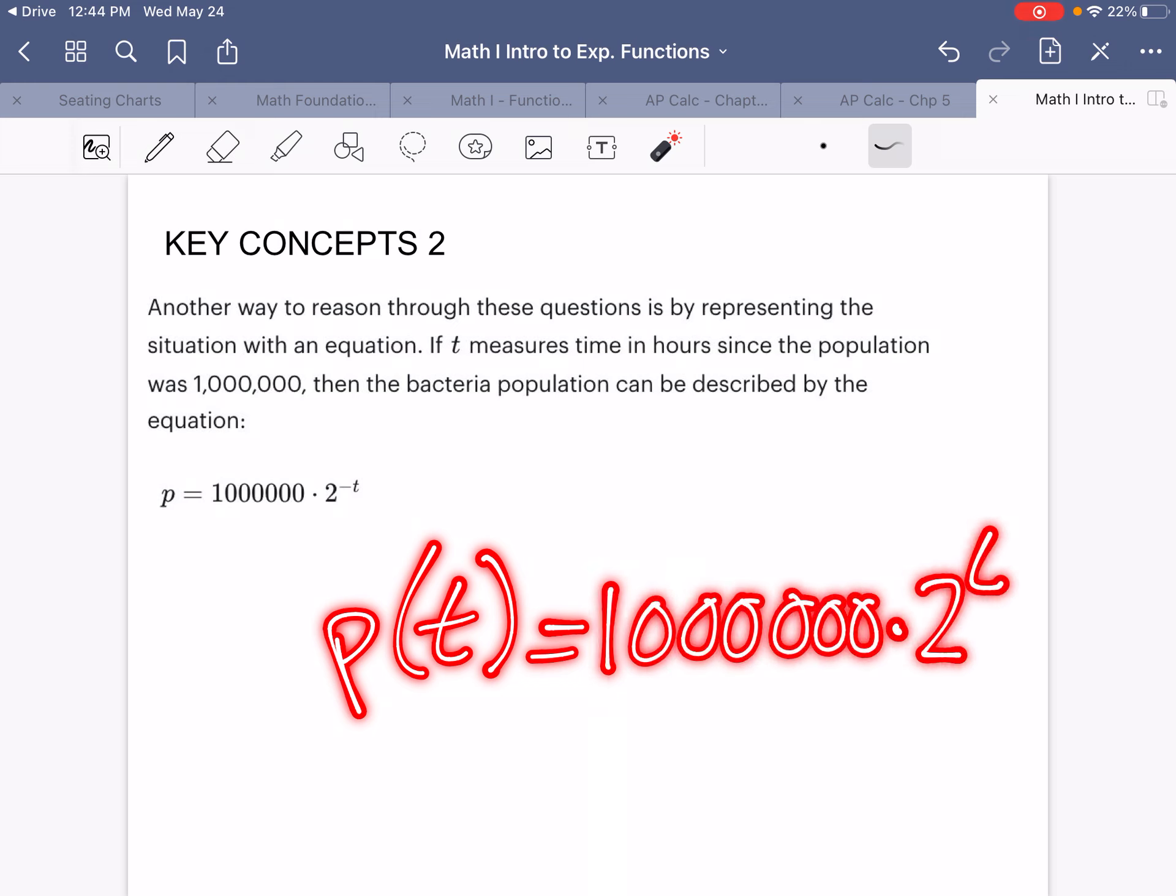But if this T is time hours since the population was 1,000,000, if I want to figure out what the population was 2 hours before that, I just got to put in a negative 2. You could do this on Desmos, or I mean, you could do it on paper if you really want to. Just remember that 2 to the negative 2 is 1 fourth.